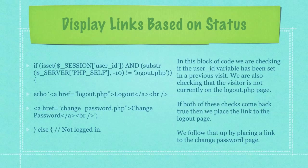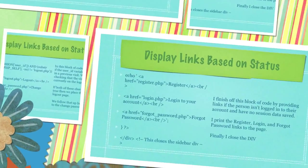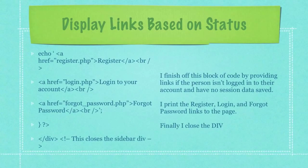In this block of code we're checking if the user ID variable has been set in a previous visit. We're also checking that the visitor is not currently on the logout.php page. If both of these checks come back true then we place the link to the logout page. We follow that up by placing a link to the change password page. I finish off this block of code by providing links if the person isn't logged in and has no session data saved — I print the register, log in, and forgot password links to the page, and finally close the div.